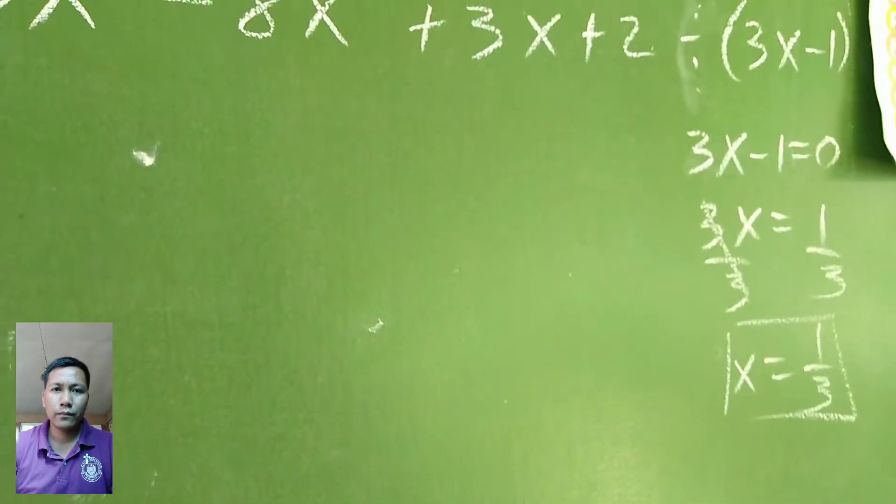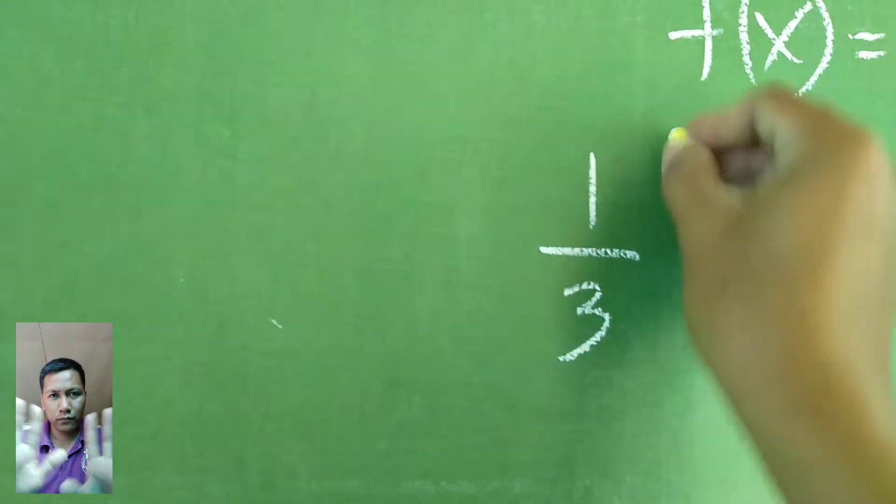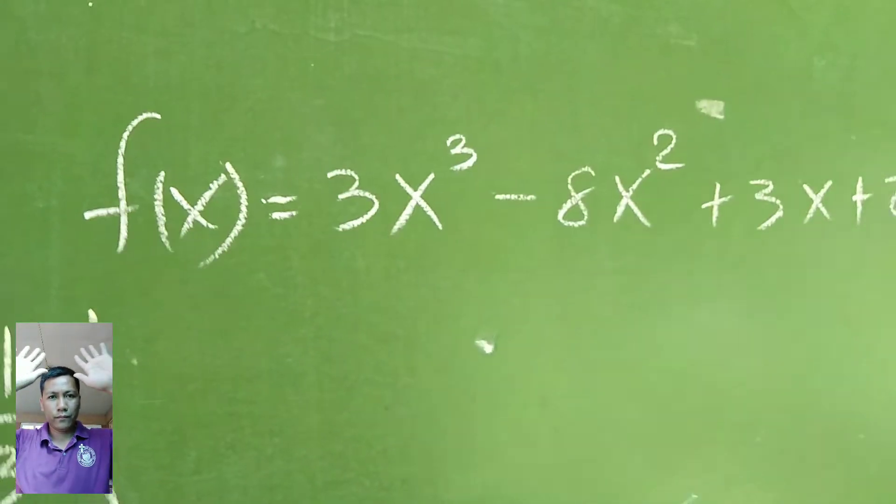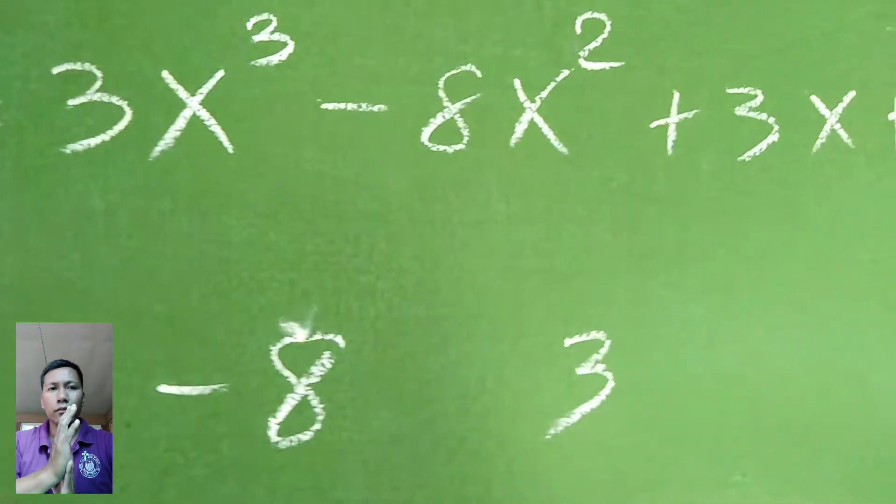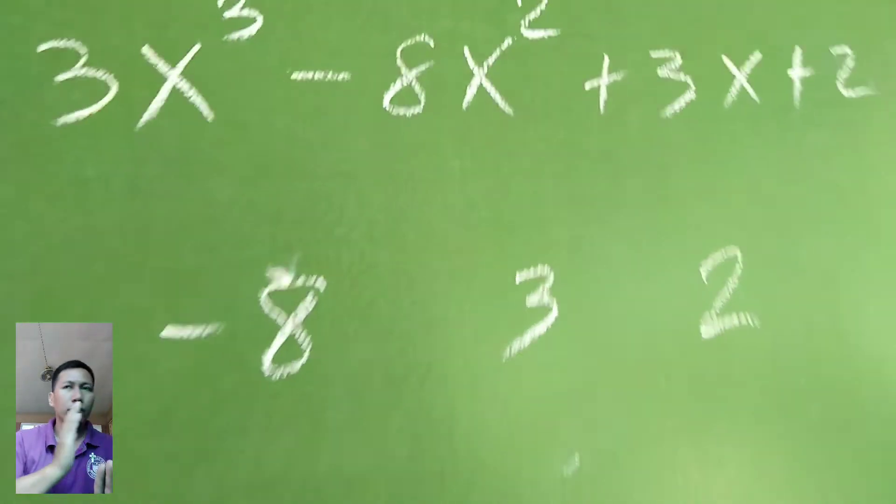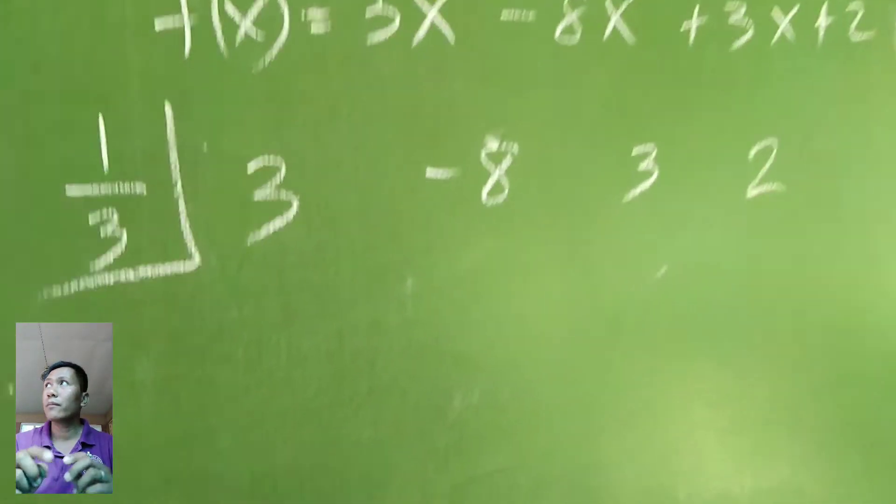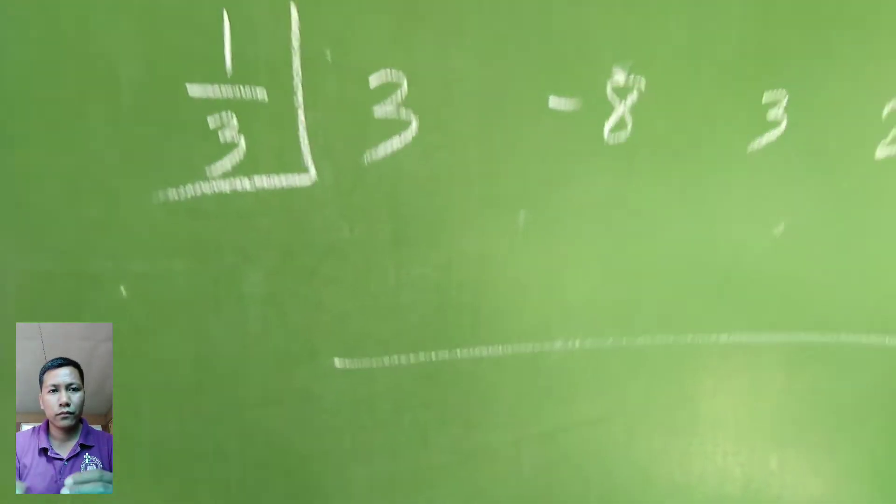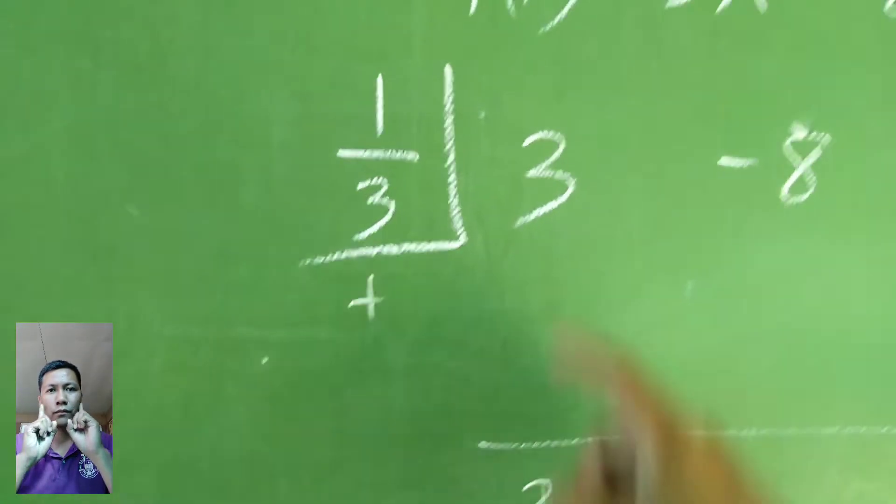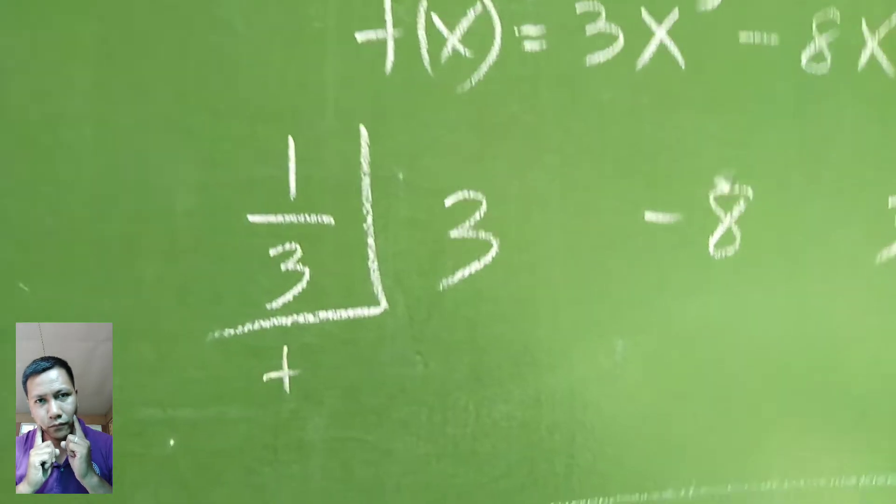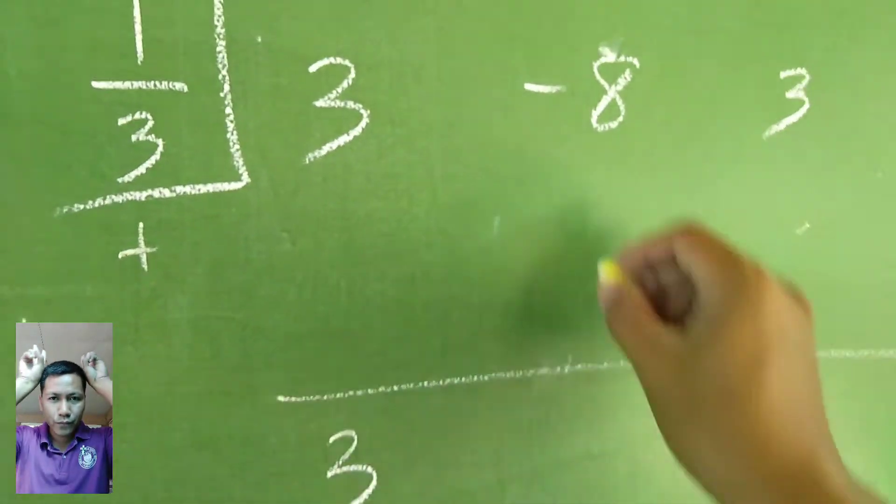This is what we'll use for our synthetic division, that is 1 third. Numerical coefficients: we have 3, negative 8, positive 3, and 2. Start computing. Bring down 3.